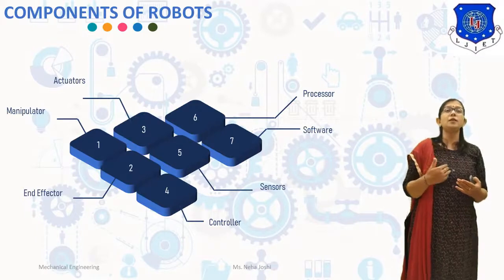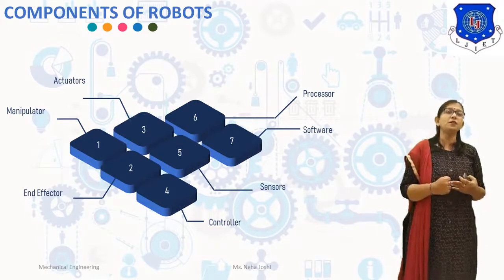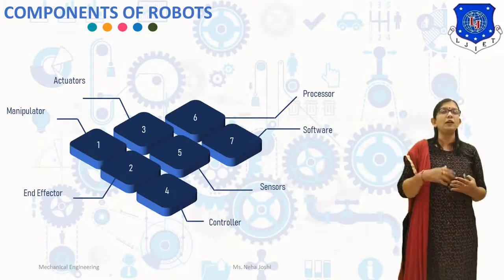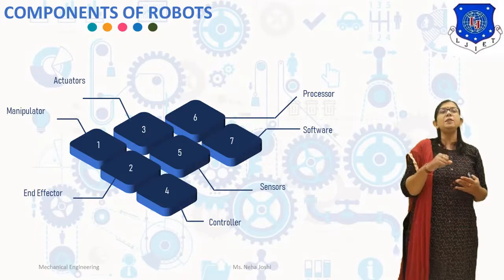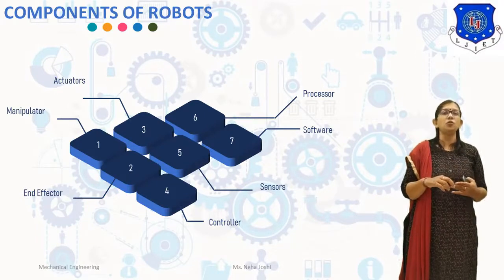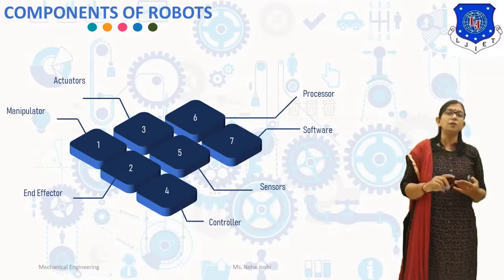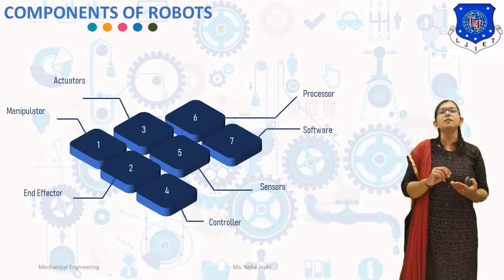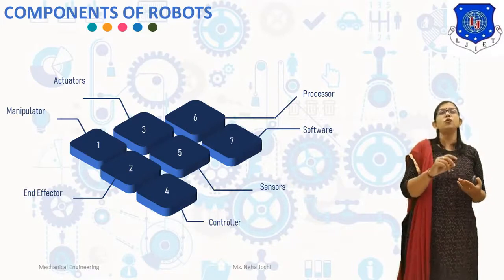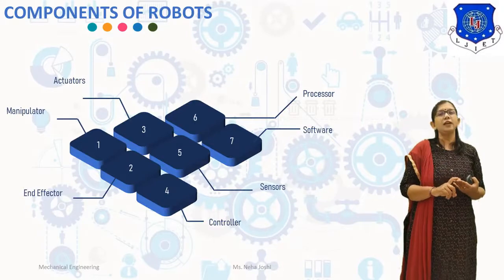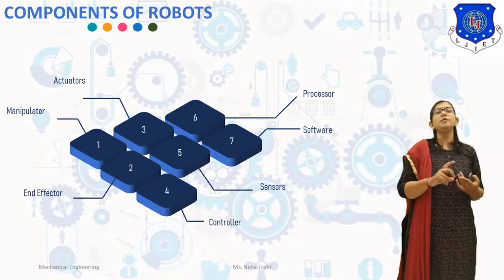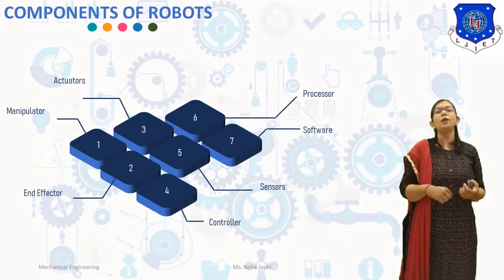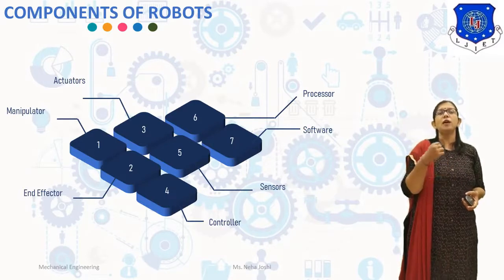The next component is sensors. Sensors are used to collect information about the status of the manipulator and the end effector, either continuously or at the end of desired motions. Sensors collect information like instantaneous position, velocity, acceleration, or various links and joints of the manipulator. This information is sent to the controller, which uses it to determine the configuration of the robot and control the movement of the manipulator.